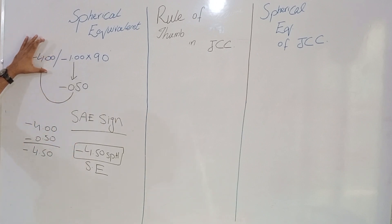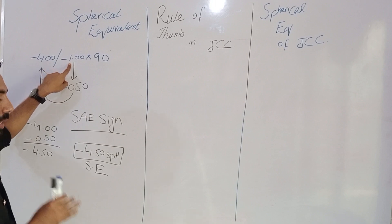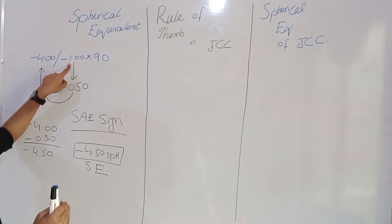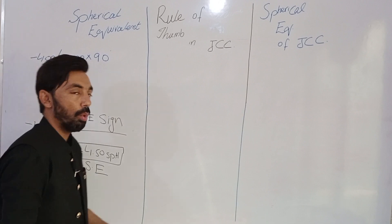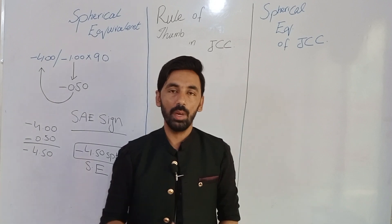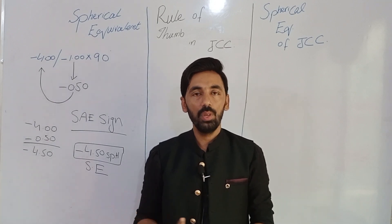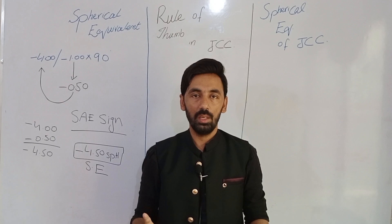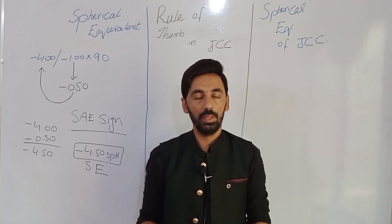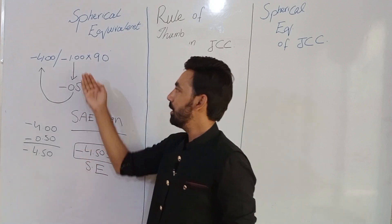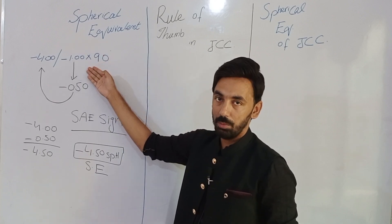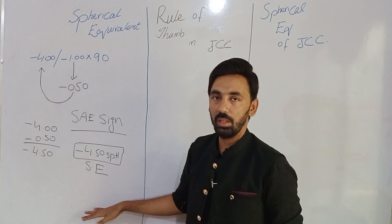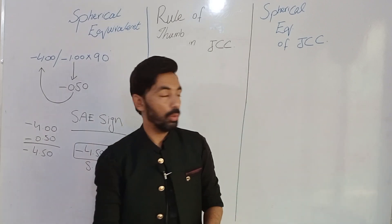One important point to keep in mind: we can only take spherical equivalent when the cylinder in the prescription is up to minus one. If the cylinder is more than one — like minus 1.5, minus two, three, four, five — we do not take spherical equivalent in those prescriptions. Only if the cylinder is up to minus one can we take spherical equivalent.